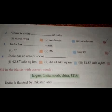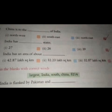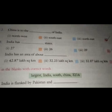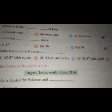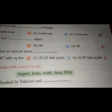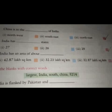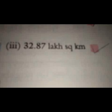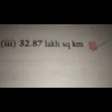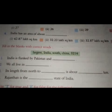Your fourth question is: India has an area of about dash. Your options are: first — 42.87 lakh square kilometres, second — 32.23 lakh square kilometres, third — 32.87 lakh square kilometres. The correct answer is 32.87 lakh square kilometres.